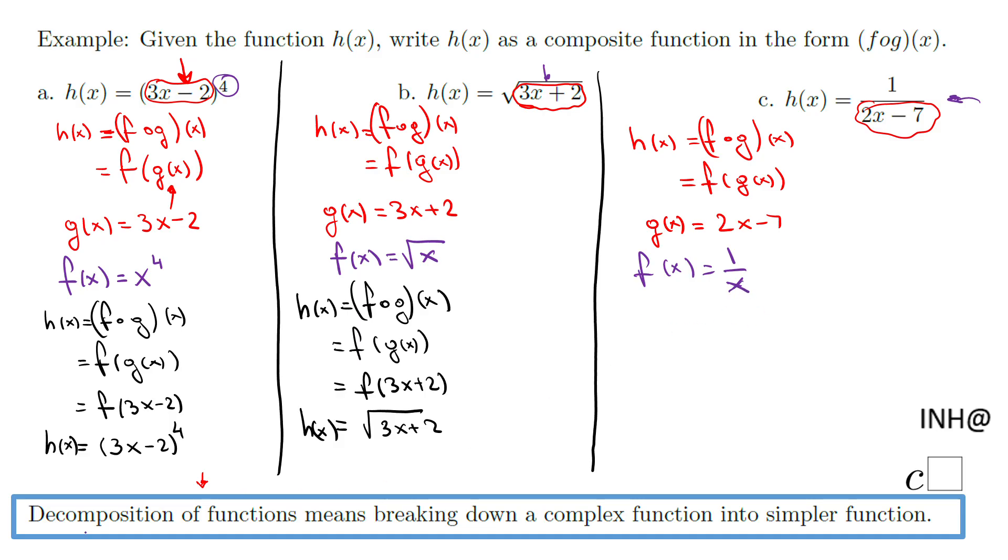So now we're going to check it to be sure we have the correct answer. h(x) is f composed of g of x, which is f of g(x), which will be f of 2x minus 7. And that means I'm going to take this 2x minus 7 and replace the x in the f function, and I get exactly what we start from - that is the function h(x).